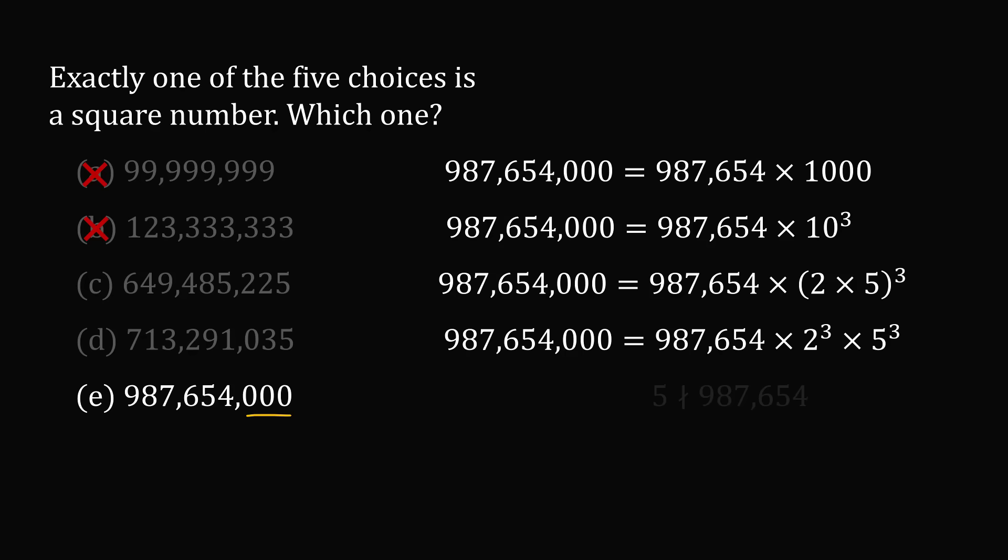Notice that 5 does not divide 987654 because this number doesn't end in a 0 or a 5. So the prime factorization of option E will have 5 raised to the third power.